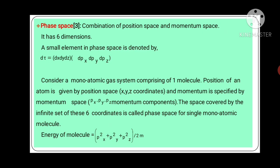Now we will see phase space. Combination of position space and momentum space is called phase space. It has six dimensions. Three position coordinates and three momentum coordinates. A small element in phase space is denoted by dτ equals dx dy dz times dpx, dpy, dpz.